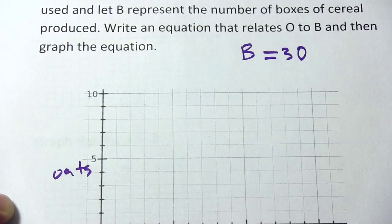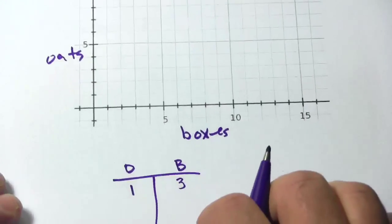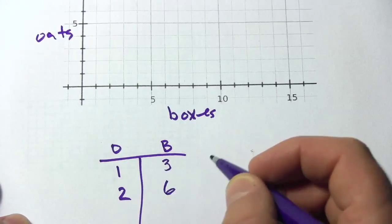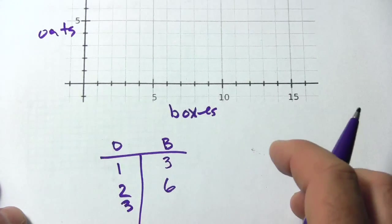So if O is one, we're going to get three boxes. If O is two, we're going to get two times three is six. If O is three, we're going to get nine.